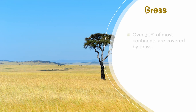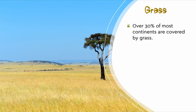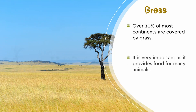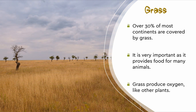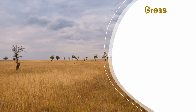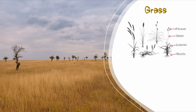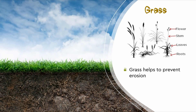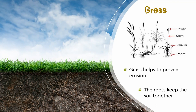Over 30% of most continents are covered by grass. Grass is very important as it provides food for most animals as well as oxygen. Can you name the different parts of a grass plant? Grass helps to prevent soil erosion — the roots keep the soil together. Can you see the roots holding onto the soil?